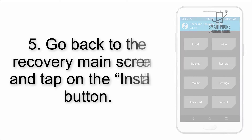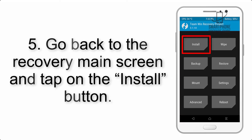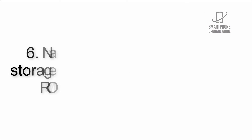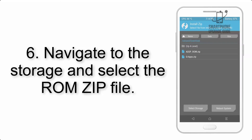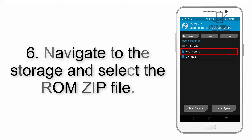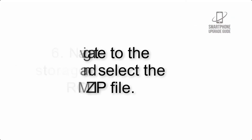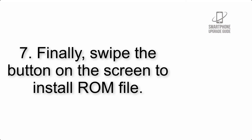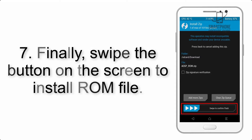Step 4: Swipe the button to wipe the device. Step 5: Go back to the recovery main screen and tap on the Install button. Step 6: Navigate to the storage and select the ROM zip file.